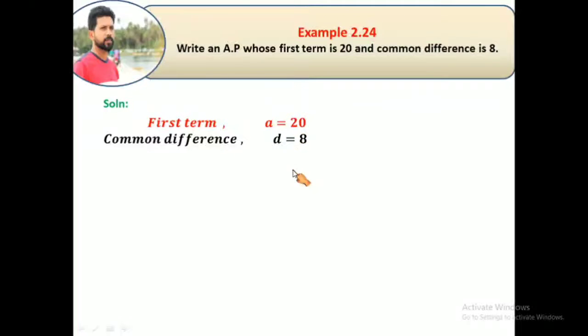So AP, to find out, the usual AP format is a, a plus d, a plus 2d, and so on. This is the first term a and d is the common difference. Just substitute the values. A, that is 20. This is 20 plus 8, 20 plus two times common difference 8, and so on.